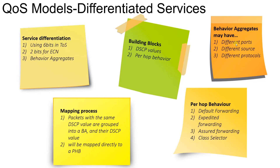So if there is a traffic flow going from one direction to another and all those flows have the same DSCP value, they are grouped together and this group is called a behavior aggregate. Even though the flows have different ports, different source addresses, or different protocols, they are grouped together under behavior aggregates. Packets with the same DSCP value are grouped into behavior aggregates, and then the DSCP values are mapped to the per-hop behavior — defining how the packet has to behave whenever it crosses a hop.